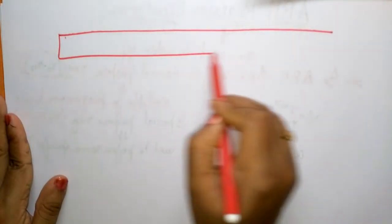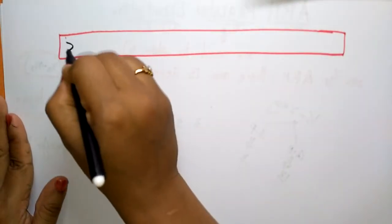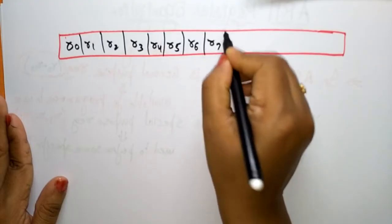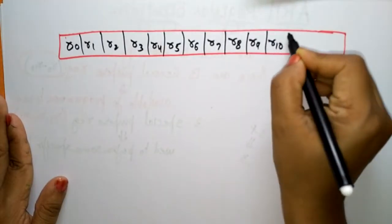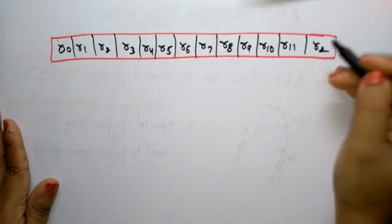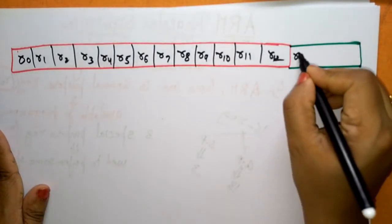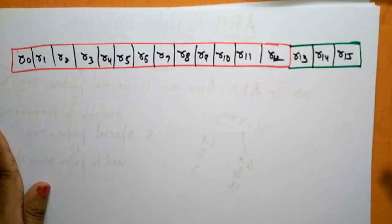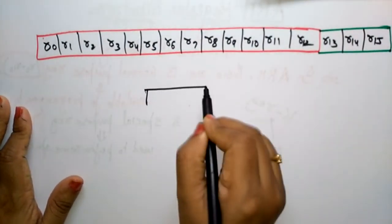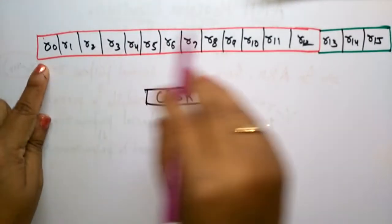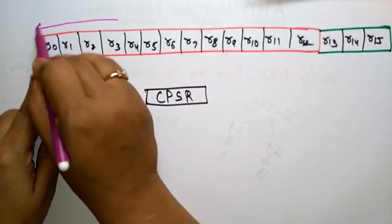Let's see this register structure. The ARM register organization has 32-bit registers. We have R0, R1, R2, R3, R4, R5, R6, R7, R8, R9, R10, R11, R12 — these are the general purpose registers. The remaining are special purpose: R13, R14, R15, and one more special register — CPSR.